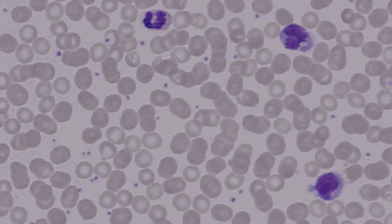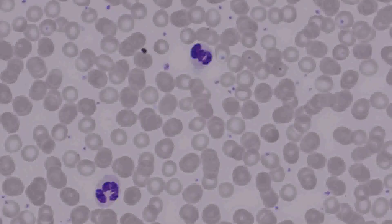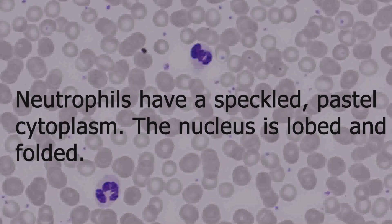Monocytes look like enlarged lymphocytes — they're going to be big cells, bigger than red blood cells, usually significantly bigger. Although they don't have granules in their cytoplasm, they usually have a lot more cytoplasm than lymphocytes do. The two on the right are monocytes, and you can tell because next to a red blood cell, they're quite large. And again with neutrophils, you can see the background is kind of speckly, the granules are not really well defined, and the nuclei tend to be lobed or folded in some pattern.